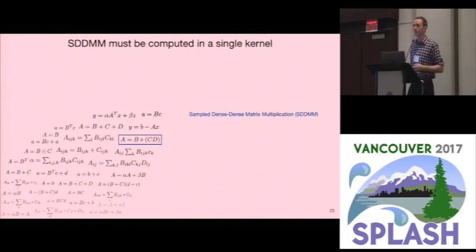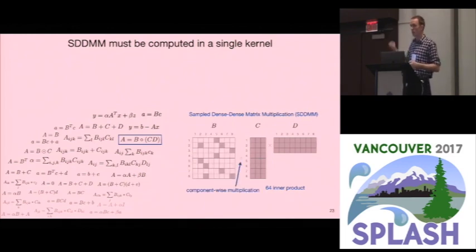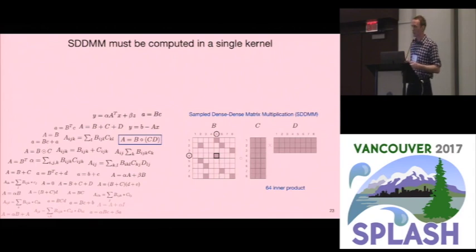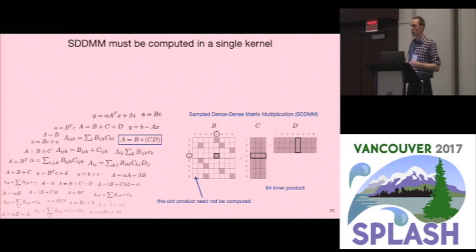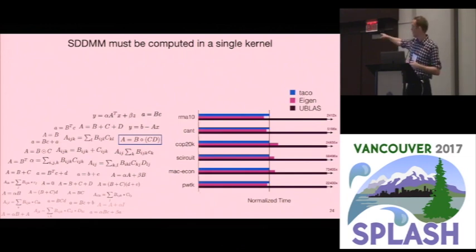Let's look at a more compound example: sampled dense-dense matrix multiplication from the machine learning literature. In this expression you multiply a dense matrix by a dense matrix, which would require 64 inner products if done as a binary expression. But then you multiply that result by a sparse matrix. For entries that have zeros in the sparse matrix, you don't have to compute any dot products. So computing it as one kernel cuts from 64 inner products to just 10. TACO emits code that does this whole thing in one kernel. Eigen has implemented the same, but UBLAS does not, causing their performance to suffer — with an asymptotic drawback as the matrix gets sparser.